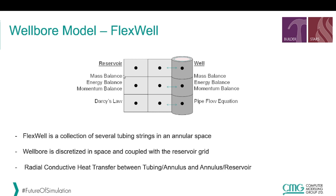In the reservoir we solve for mass, energy, momentum conservation equations and for Darcy law. In the discretized well we solve for the same conservation equations and for the pipe flow equation, and everything is done in a fully coupled way. Additionally, the radial conductive heat transfer from the well into the reservoir is accounted for — from the tubing to the annulus and then from the annulus to the reservoir — with the heat transfer coefficient being a function of the thermal parameters of the different tubing strings and annular space.